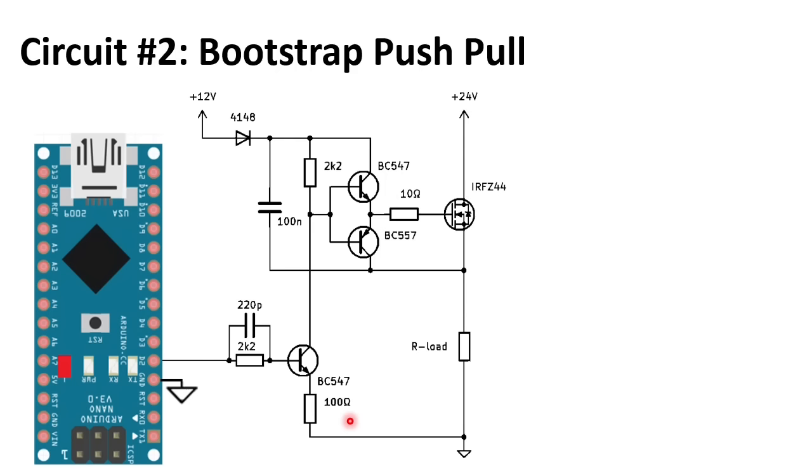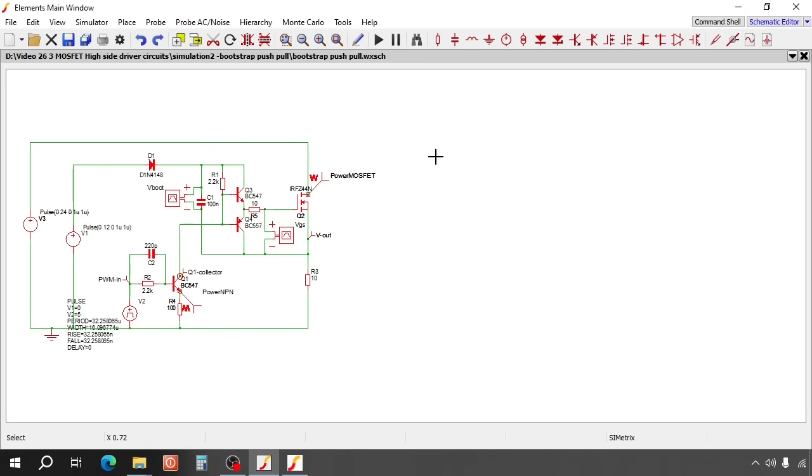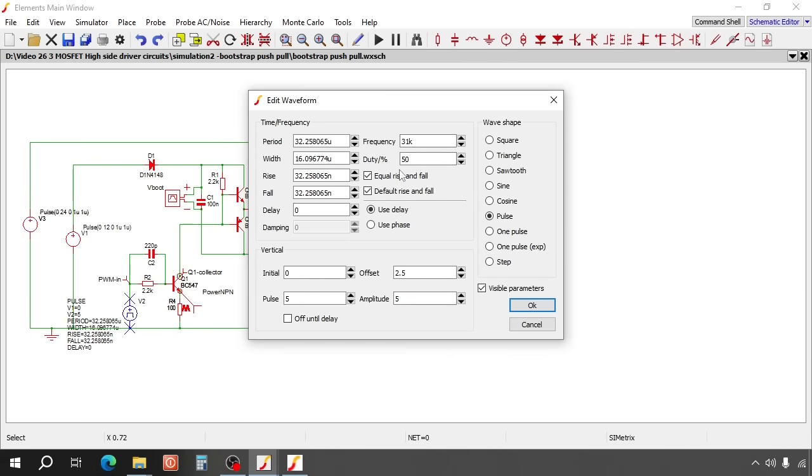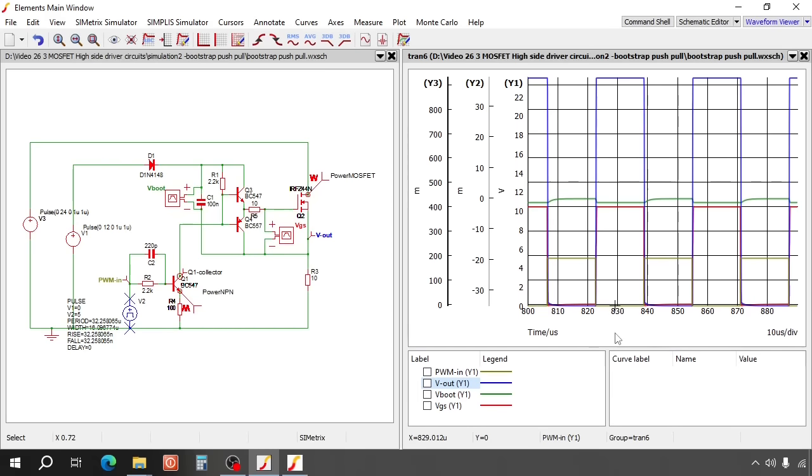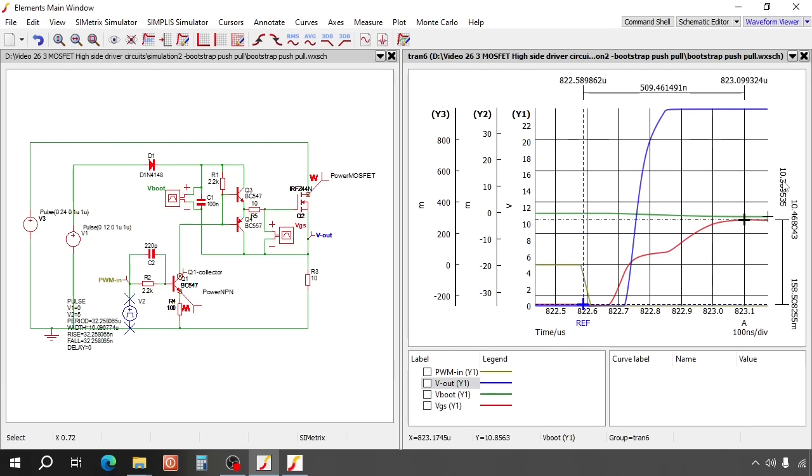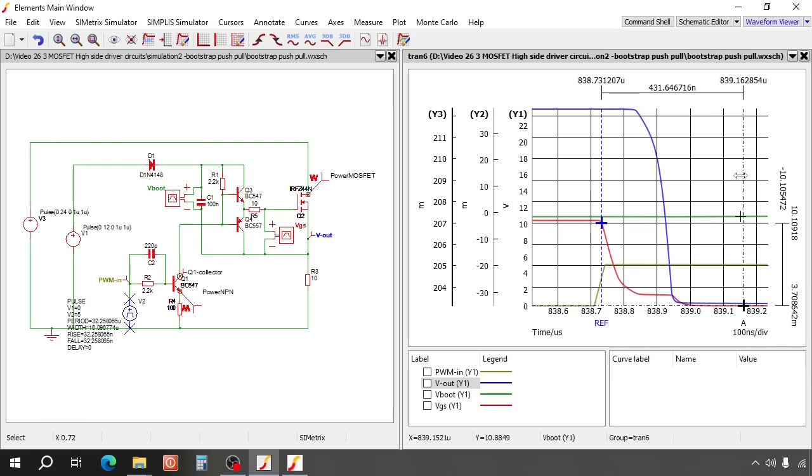Now let's simulate this circuit. The first circuit had switching delays of 2 to 3 microseconds. Let's see how this one does. Here you see the circuit in the simulator. We still have 31 kilohertz at 50% duty cycle. Let's simulate. Let's first check the switch on speed. The output voltage is about 217 nanoseconds. Now let's check the switch off speed. That is about 210 nanoseconds.